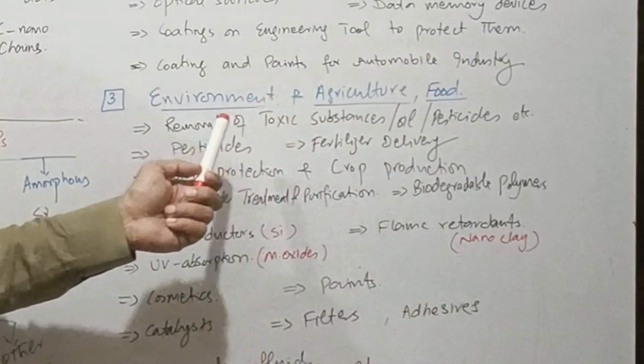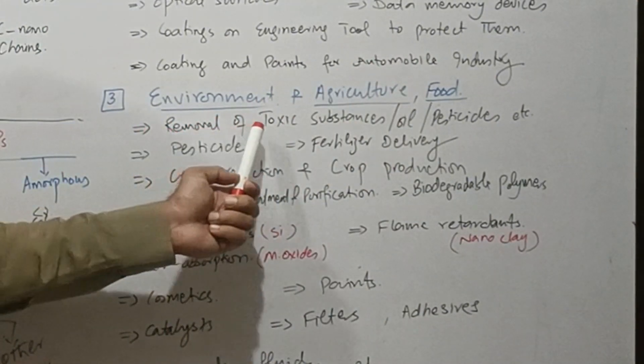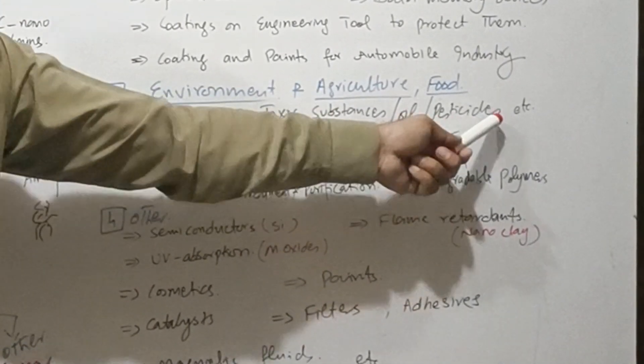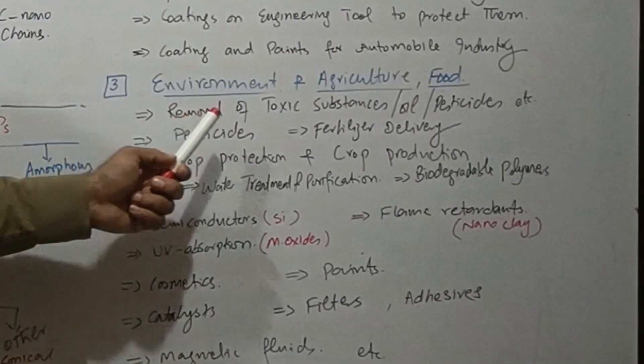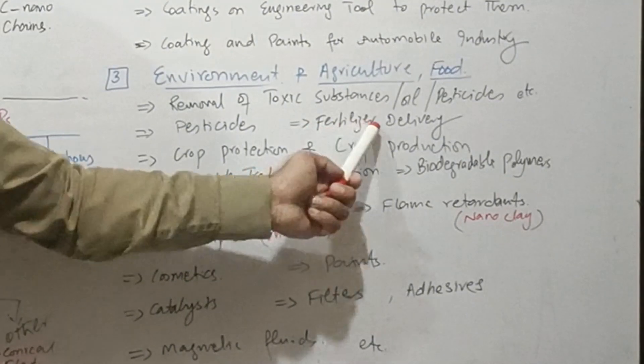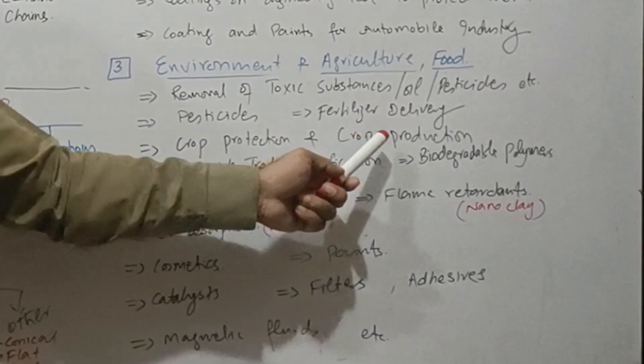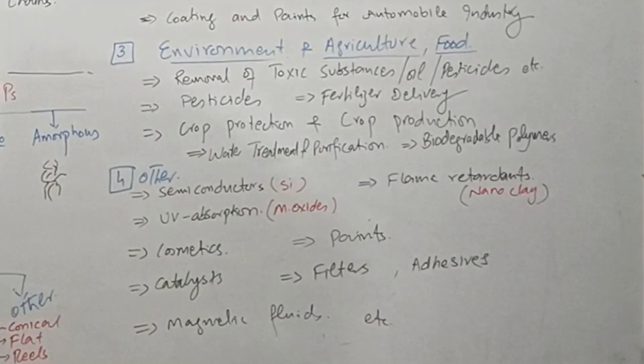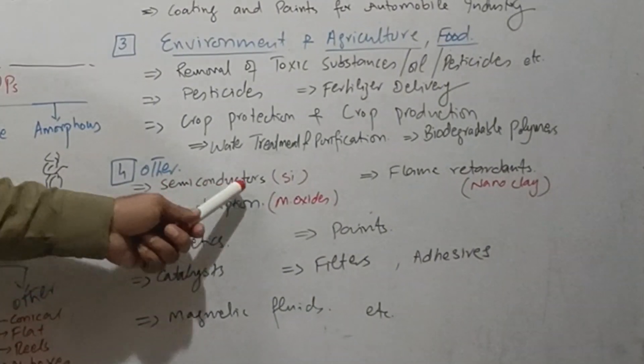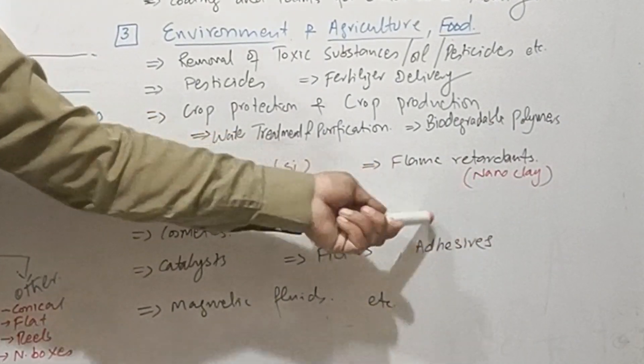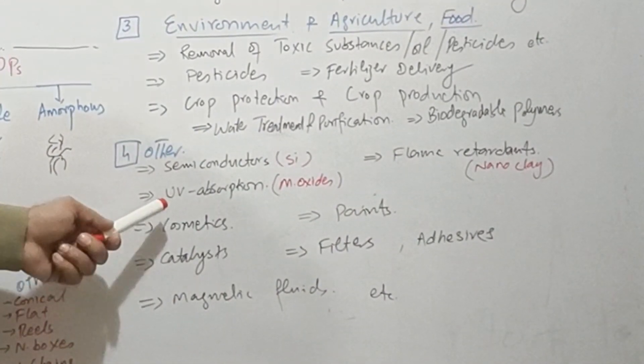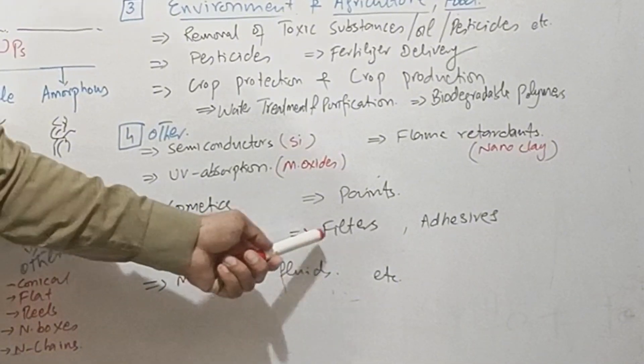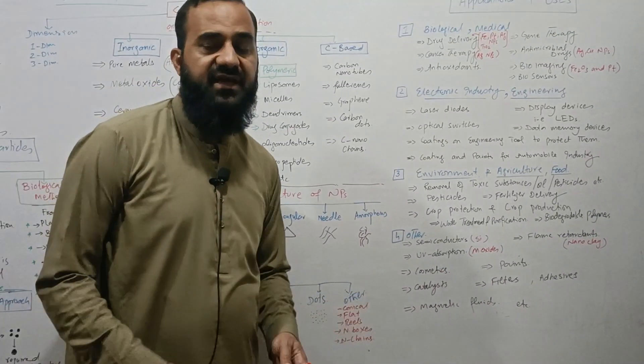What are the environmental and agricultural and food science uses? Removal of toxic substances, oil droplets, and in the formation of pesticides. Nanoparticles are also used for the fertilizer delivery system, crop protection as well as crop production, wastewater treatment and water purification, biodegradable polymer formation, semiconductor preparation, flame retardants as nanoclay are used as flame retardants, UV absorption devices, cosmetics, paints, catalysts, filters, adhesives, magnetic fluids and many more.